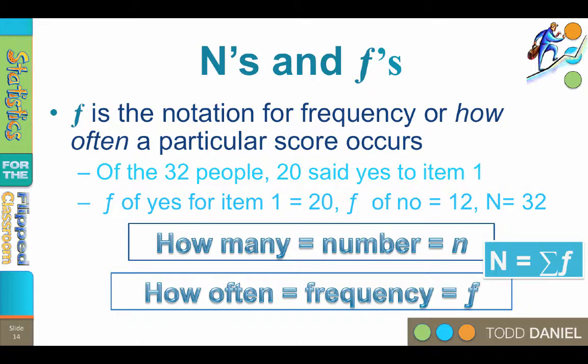Therefore, with some simple subtraction, I know that the frequency of those answering no was 12. Together with the total of yes and no responses, I get my total sample size of 32.